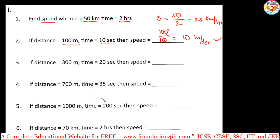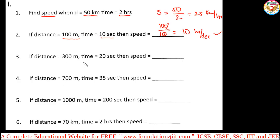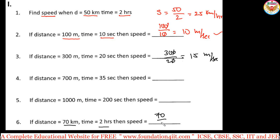More speed problems: when distance and time are given, just apply the formula. For example, 300 divided by 20 — simplify by cancelling zeros to get 30 divided by 2, which is 15 meters per second. Similarly, 700 divided by 35 — simplify to 70 divided by 2, which is 35 kilometers per hour.